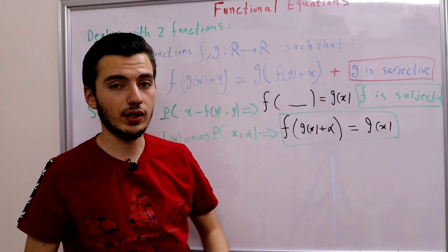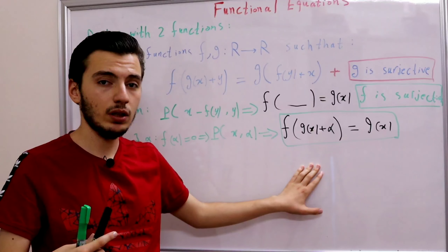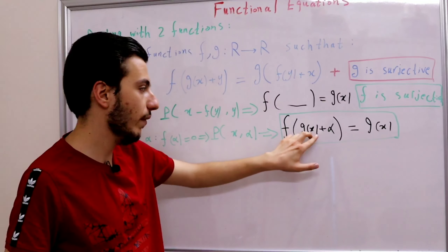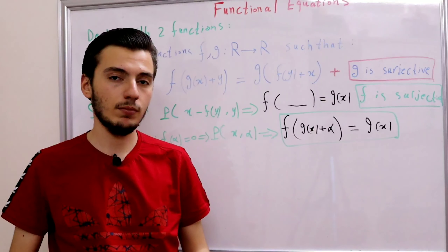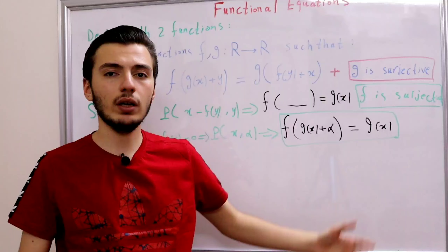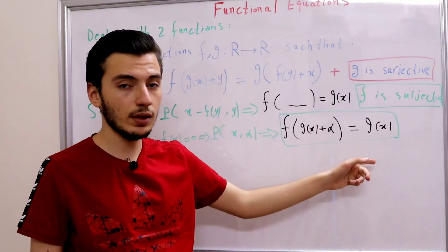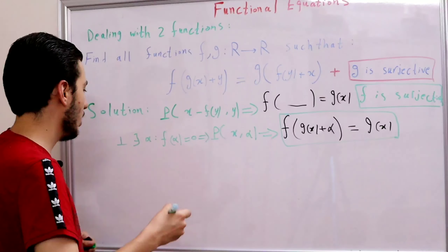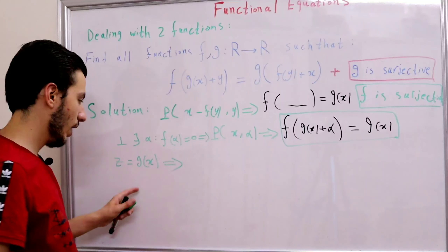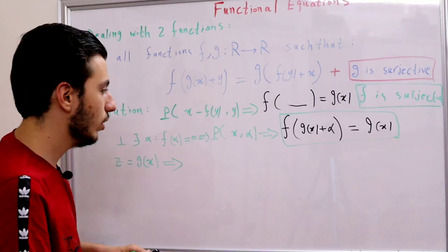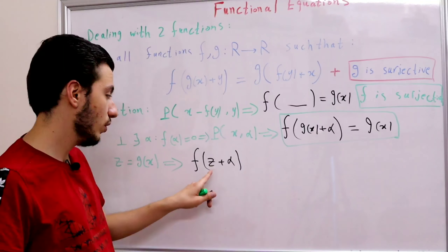Take a look at this equation f(g(x) + α) = g(x). There is only one variable x, and it appears inside g on both sides. The key observation is that g is surjective, so g(x) can be any real number z. Replacing g(x) with z, we get the simple equation f(z + α) = z, where α is constant and z is any real number.